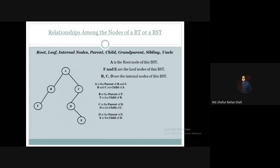Now, the arrows are not explicitly directed here, but in a tree, when we think about any path, we always consider the path going downward from the root. So the node that is above will be considered the parent, and the node that is below it will be considered the child. These are the parent-child relationships in our example.